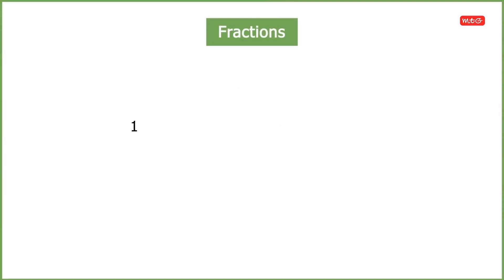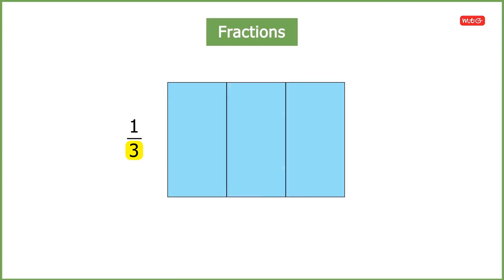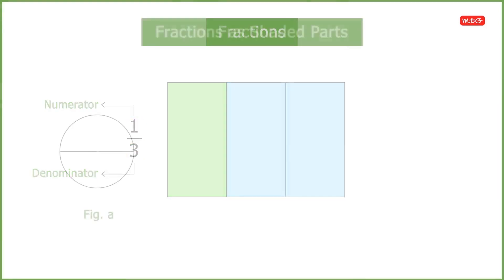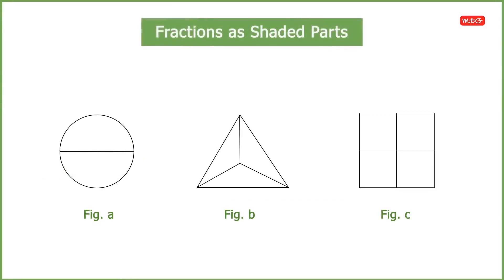Mathematically, fractions are represented as a division statement using two numbers — one at the top and one at the bottom — with a line between them. The number at the bottom tells us the total number of equal parts of the whole and is called the denominator. The number at the top tells us the number of parts used and is called the numerator.